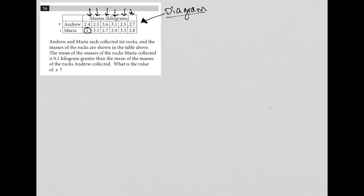So the question says, Andrew and Maria each collected six rocks and the masses of the rocks are shown in the table above. Okay, so these are masses of rocks that were collected. The mean of the masses of the rocks Maria collected is 0.1 kilogram greater than the mean of the masses of the rocks Andrew collected. What is the value of X?